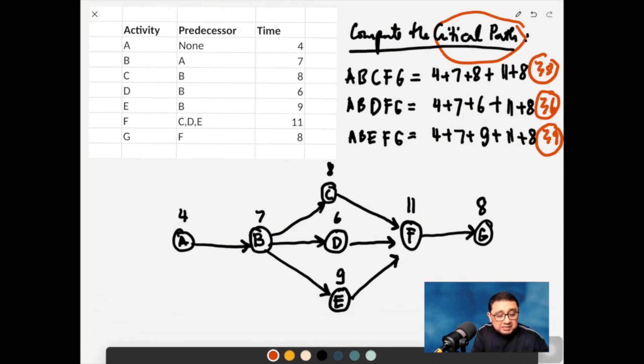It's A, B, E, F, G. These are the critical paths. So what does that mean? This is the longest line in the network.